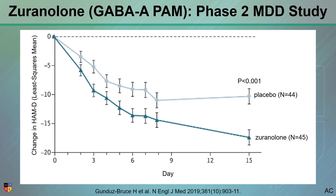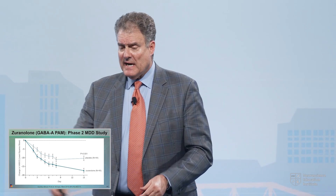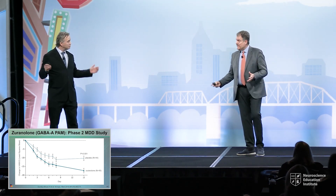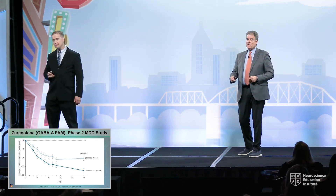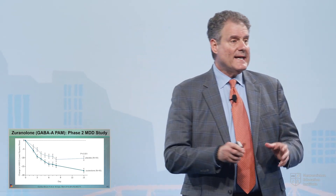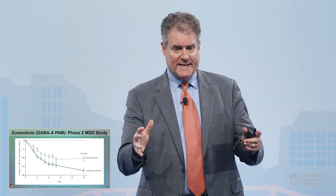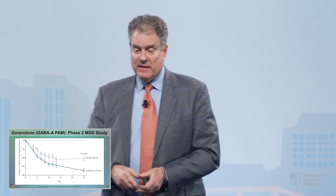This is the phase two study that was done, and it was extremely positive. There is evidence of early onset of efficacy as soon as day three, and the drug was used for a two-week course of treatment. So this is a PRN approach to treating depression? It's essentially an intermittent treatment paradigm. This is a new treatment paradigm — you give this medicine for two weeks, and it holds a charge, is the idea here.